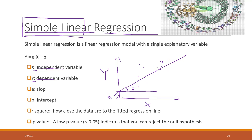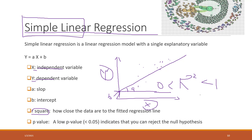We are looking for the best line that can fit with the data. We can use this model to predict new values of Y based on X. We also have some metrics. R-square is a value between 0 and 1. If R-square is close to 0, that means the line does not fit with the data very well. If R-square is close to 1, that means the predicted line fits with the data very well.